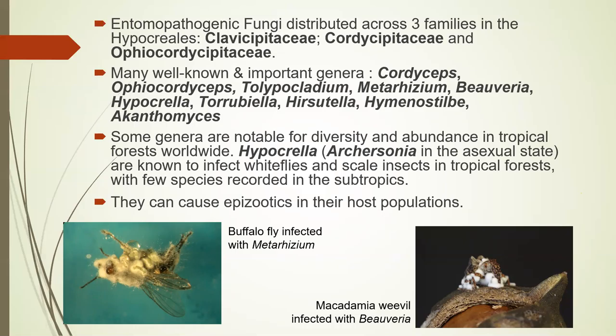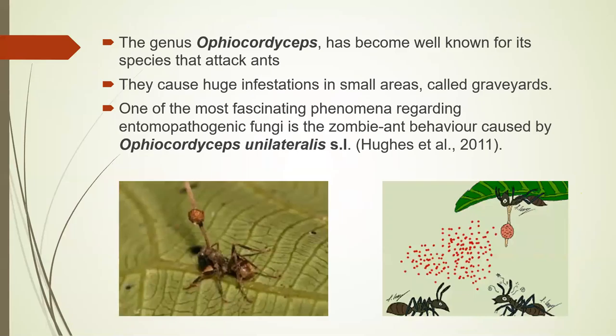Some genera are notable for their diversity and abundance in tropical forests worldwide, like Hypocreella — whose asexual state is Aschersonia — known to infect whiteflies and scale insects in tropical forests, with a few species extending into more temperate and subtropical zones. These groups can cause epizootics under the right environmental conditions. There's also a buffalo fly infected with Metarhizium and a macadamia weevil infected with Beauveria shown here — they look beautiful in their green and white coats respectively. Regarding taxonomy, we're now using one name per fungus, so old sexual and asexual names have been merged — worth knowing the old names for literature searches.